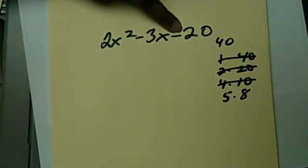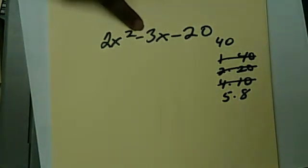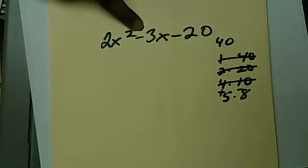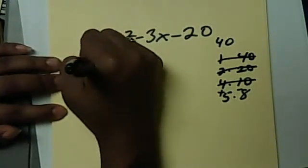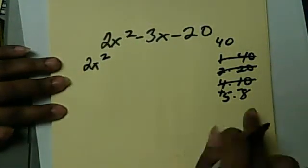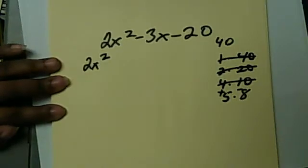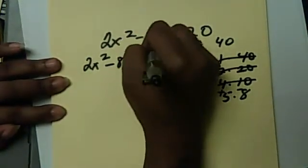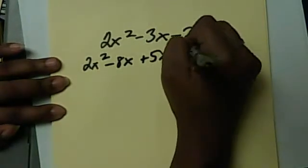This sign, since it's negative, tells us that the signs are going to be opposite. So we need a positive and a negative. And this one tells us that the higher one is going to be this sign. So we have a negative 8 and a positive 5. Again, we have 2X squared. Now, if I have a minus, I like to write my minus first. Minus 8X, it doesn't matter. Plus 5X, minus 20.